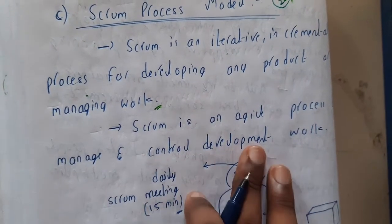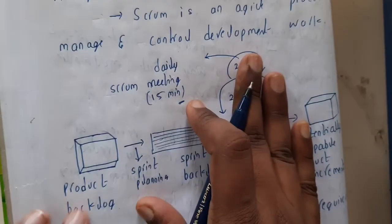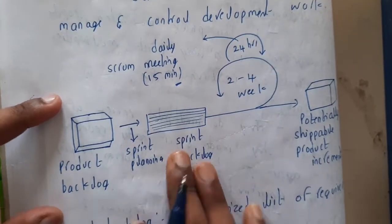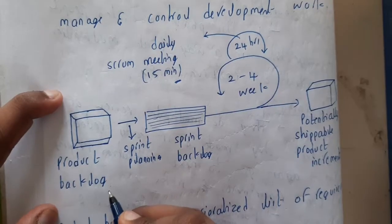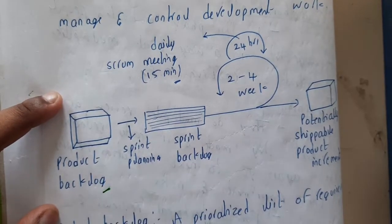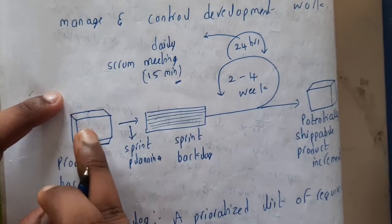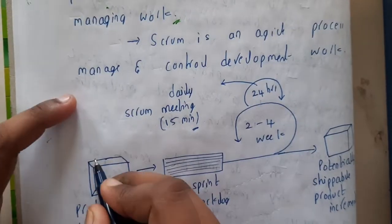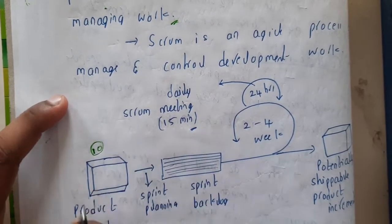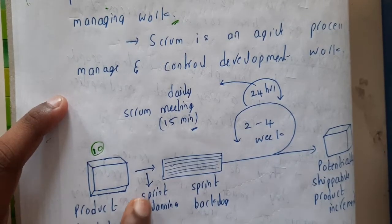Scrum is an agile process to manage and control the development work. Initially, once you get the product requirements, you will be placing them all in the product backlog. Basically, you will be storing everything here. Assume that you have got 10 requirements, so you'll be storing them here.